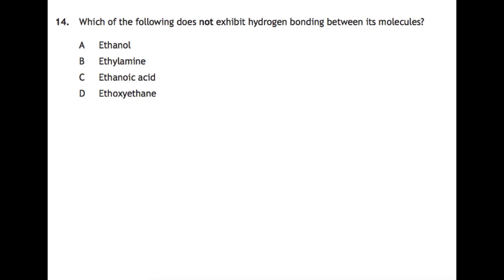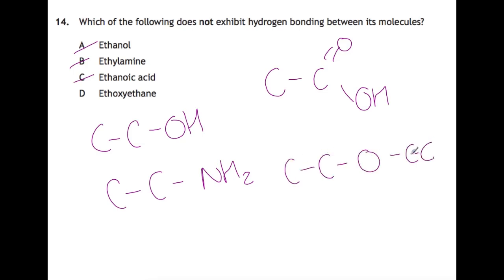If we look at question 14, which of the following does not exhibit hydrogen bonding between its molecules? To get hydrogen bonding, you need to have an OH bond, an NH bond, or an HF bond. I would just sketch these out. Ethanol, we've got C-C-OH, so that will have hydrogen bonding. Ethylamine, we've got C-C-NH₂, so that will also have hydrogen bonding. Ethanoic acid, C-C double bond O, OH, so that will have hydrogen bonding between its molecules. And then ethoxyethane. Here's your ethoxy part, and then here's your ethane. There's no OH bond here. It can hydrogen bond to water with the H from water bonding into the oxygen, but it can't hydrogen bond to itself. So the answer is D.